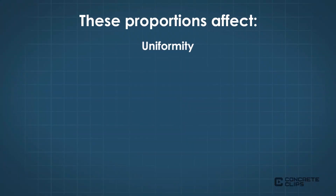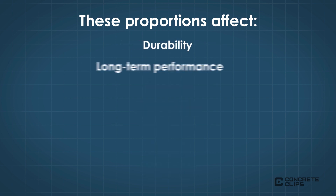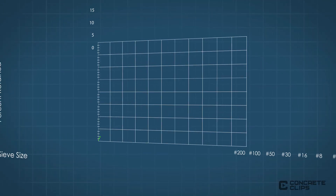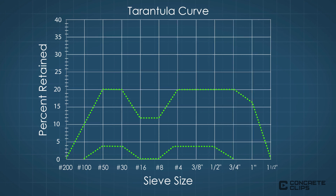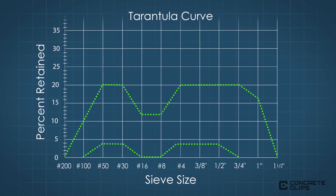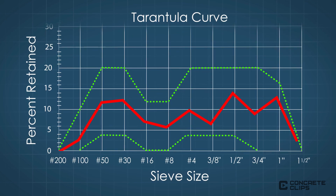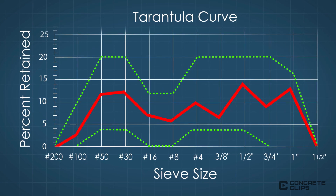These proportions affect uniformity, workability, stability, pumpability, economy, porosity, and shrinkage of the concrete mixture, which in turn affects durability, long-term performance, and smoothness. For paving concrete, an optimized gradation as represented by the tarantula curve is an effective way of combining aggregate particles to achieve the desired mixture properties. The tarantula curve establishes boundaries for the percent of aggregate particles retained on various sieve sizes to minimize segregation and ensure good workability.